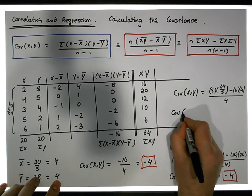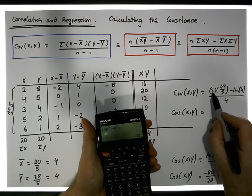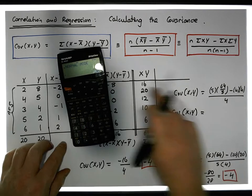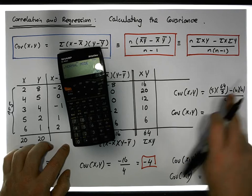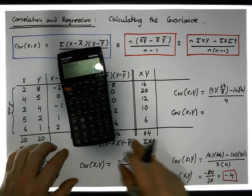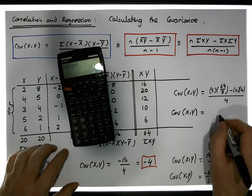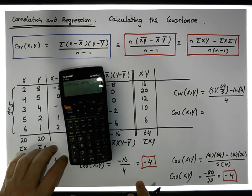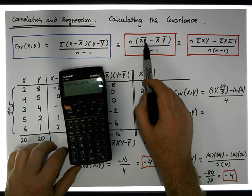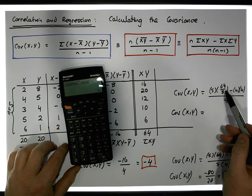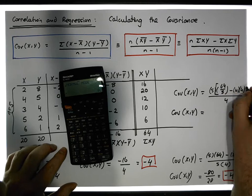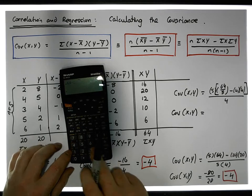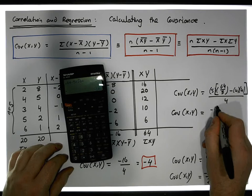Working through this: 5 times 64/5 — the 5's cancel — gives us 64. Then 5 times the average of x times average of y: 5 times 16 gives us 80, but we're subtracting it, so it's 64 minus 80 in the numerator — giving us minus 16 divided by 4, which equals minus 4. This once again agrees with our earlier calculations.